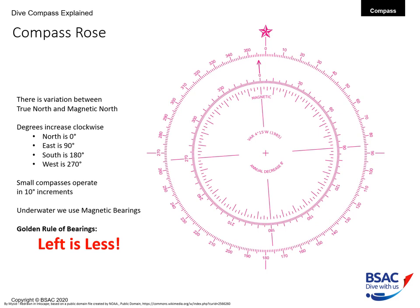The compass rose is broken down into 360 degrees. North is at zero, east is at 90 degrees, south at 180 degrees, and west is at 270. This particular compass rose is broken down into increments of one degree, whereas a small hand bearing compass used in diving operates in 10 degree increments. When underwater we don't really consider true north — all our navigation is done with magnetic bearings.